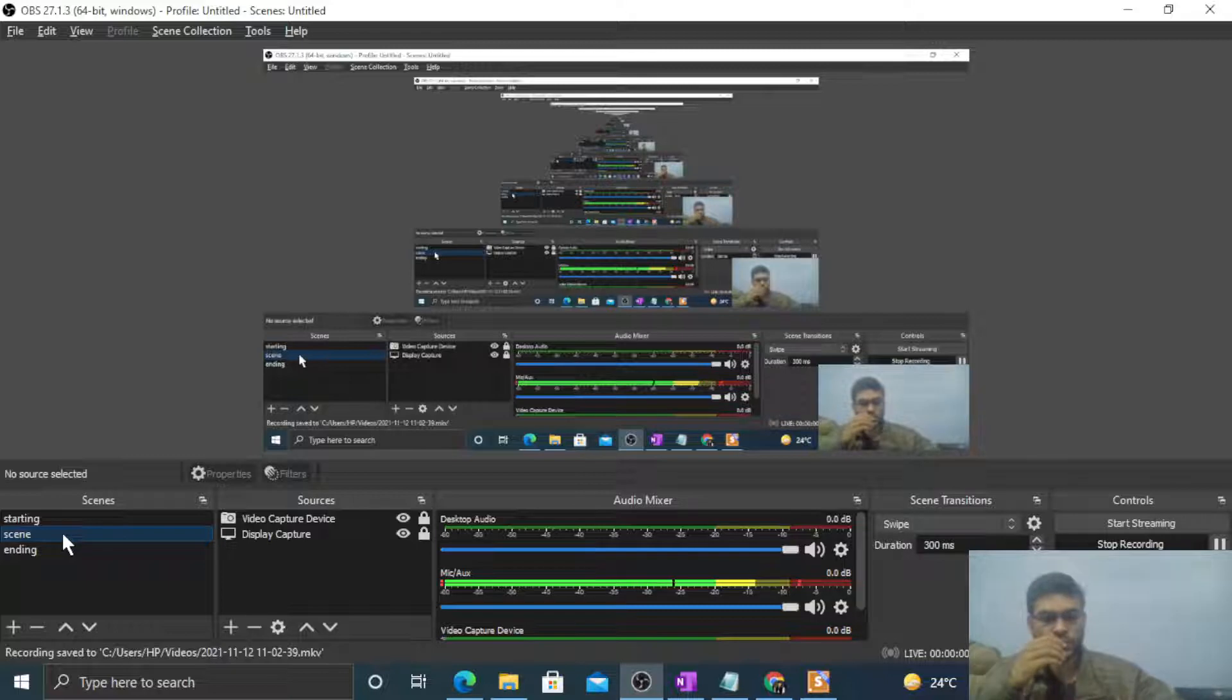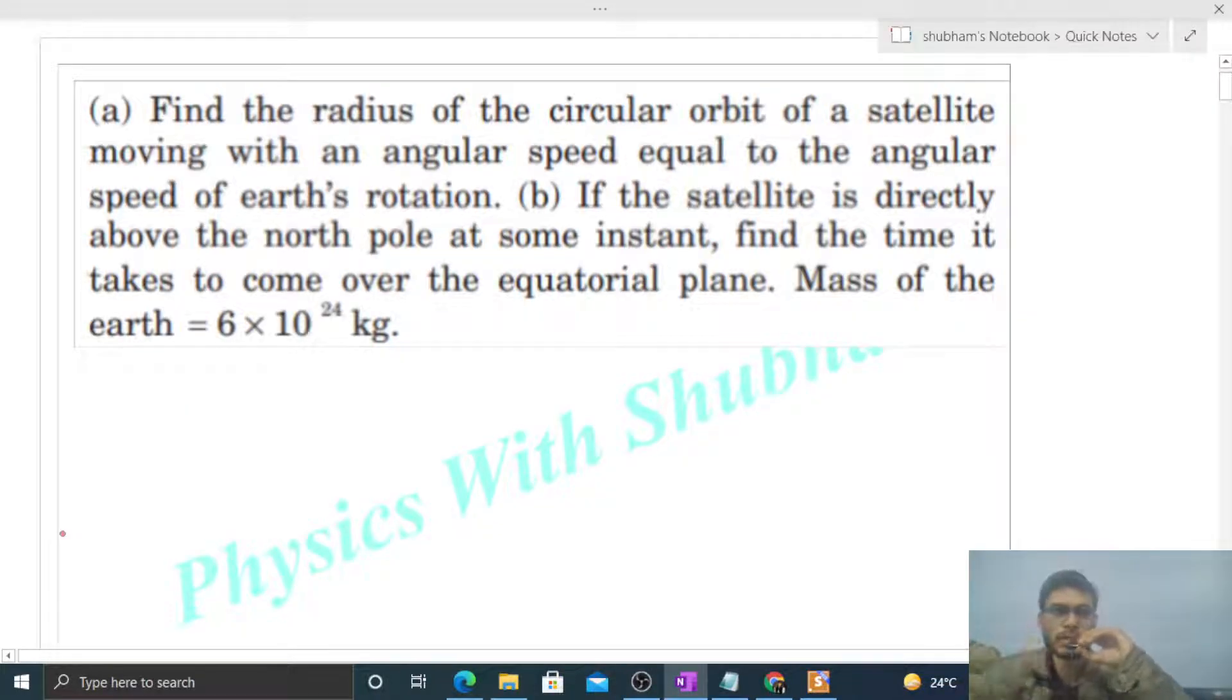Okay, hi everyone. Today let's discuss this interesting problem. It says find the radius of the circular orbit of a satellite moving with an angular speed equal to the angular speed of Earth's rotation.